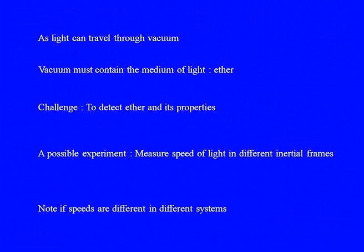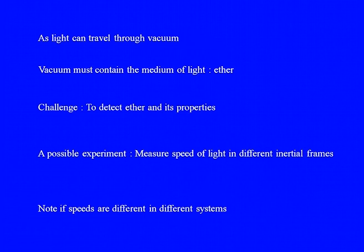Since light also should require a medium to propagate, they named this medium 'ether' — actually, they used to call it the luminiferous ether. As light can travel through vacuum, then vacuum must contain this medium of light, which is ether. So vacuum is full of ether — that is the medium of light. Like every assertion in physics, even if you make a theory, it has to be validated by experiments. The challenge confronting physicists in the late 19th century was to detect ether and its properties.